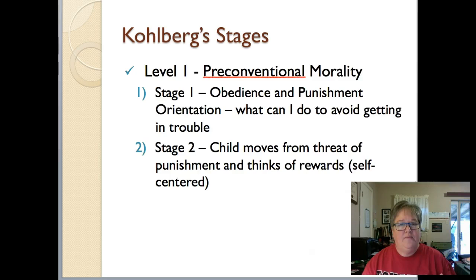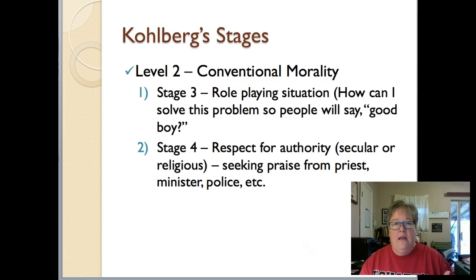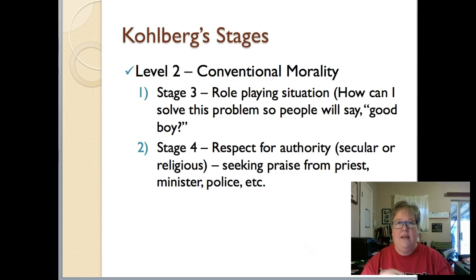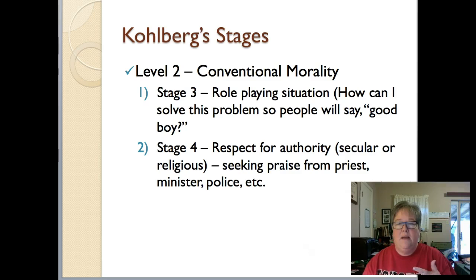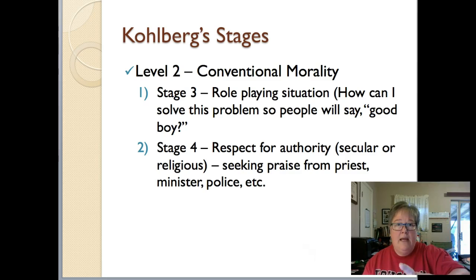Level two is conventional morality. In stage three, kids are thinking about how to solve the problem so people will say 'good boy' or 'good job' — they want praise from anyone. Stage four is where kids solve problems seeking praise from an authority figure: a priest, a minister, a policeman. That's the key difference — in stage three you want praise from anybody; in stage four you want it specifically from an authority figure.